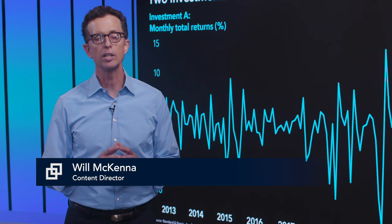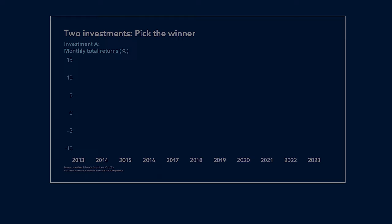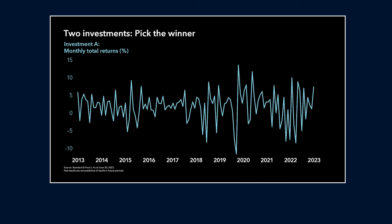The first chart — let's call it Investment A — shows monthly returns over the last 10 years. You can see there were some wild swings and steep declines that might have made you want to sell.